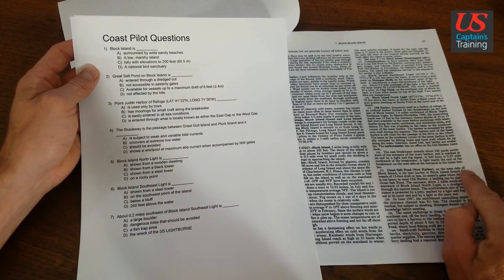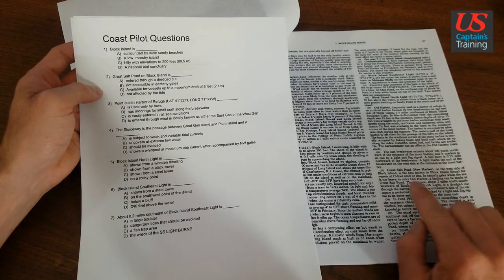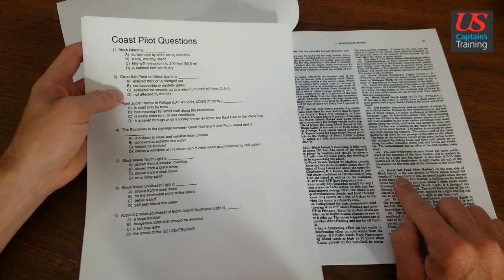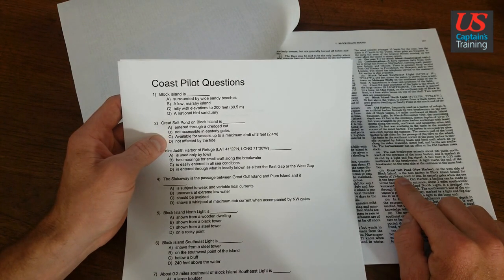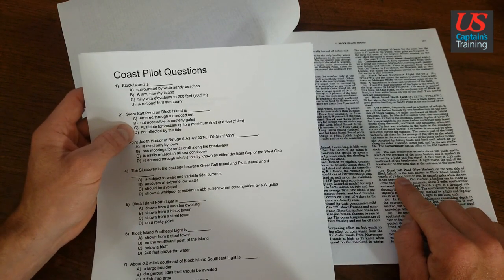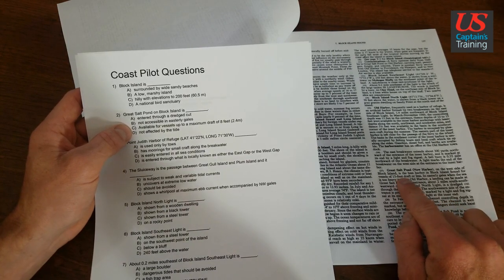Great Salt Pond, on the west side of Black Island, is the best harbor in Black Island Sound for vessels of 15 foot draft or less. Look at that, 15 foot or less. Now our question says eight feet or less, so we can count out answer C because we're seeing maximum 15.